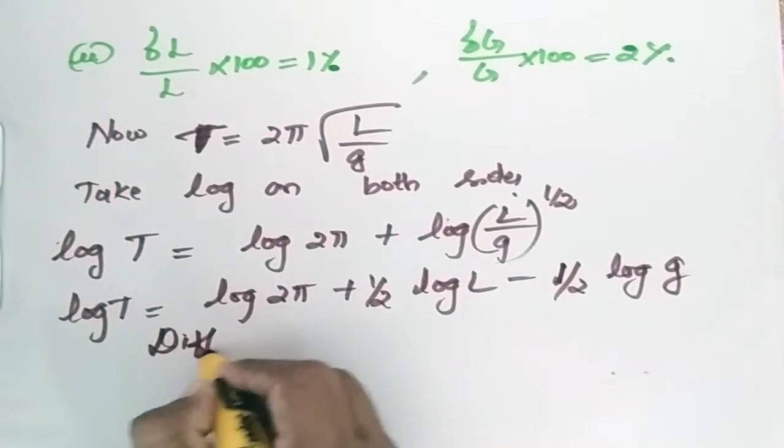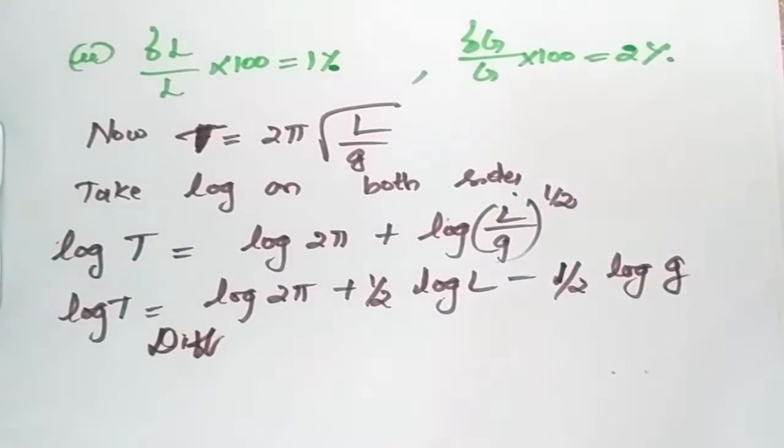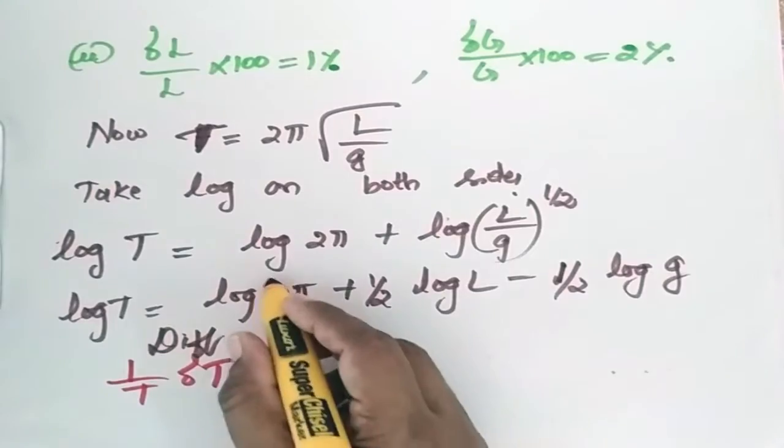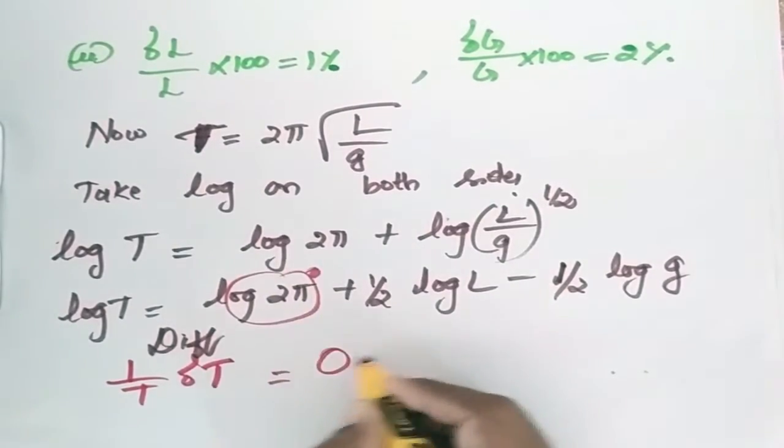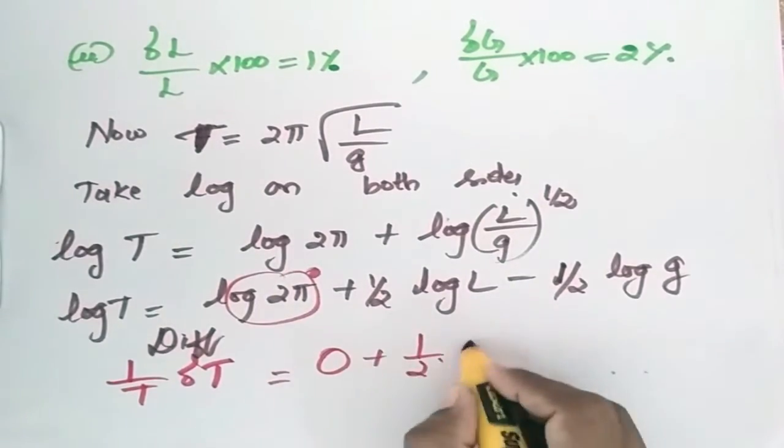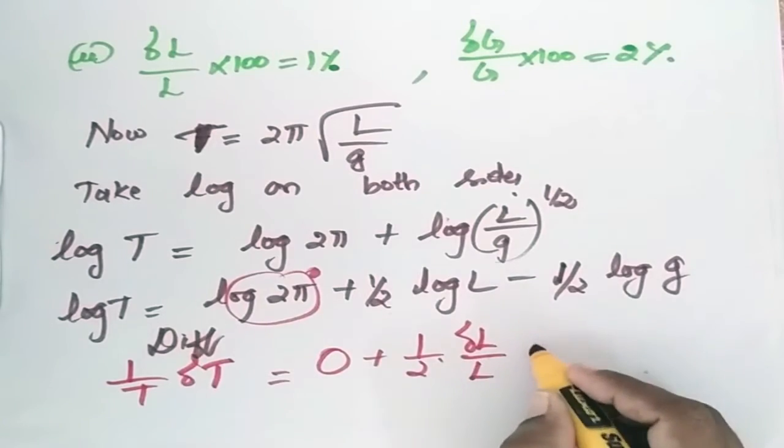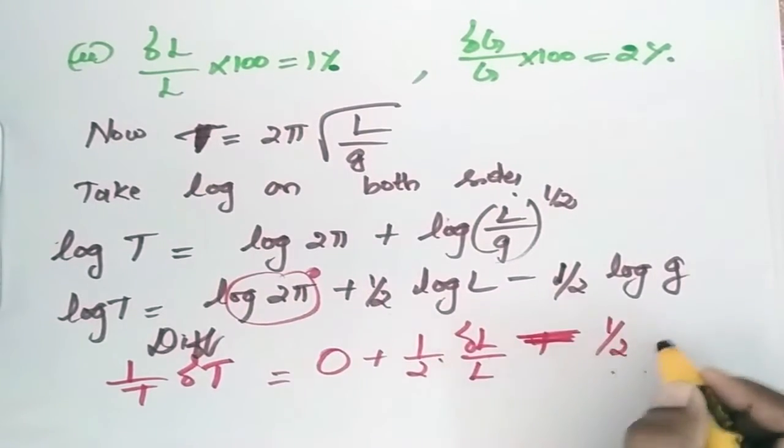Now differentiate. (1/T)ΔT = 0 + (1/2)(ΔL/L) - (1/2)(Δg/g).